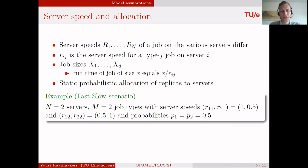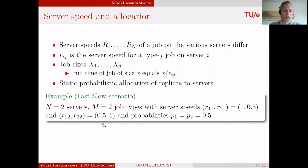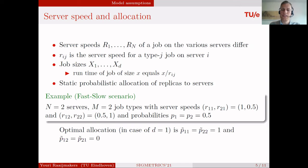To give more intuition, consider a fast-slow scenario with two servers and two job types. Job type 1 has server speeds 1 and 0.5 on servers 1 and 2. Job type 2 has server speeds 0.5 and 1 on servers 1 and 2. So job type 1 is fast on server 1 and slow on server 2, while job type 2 is slow on server 1 and fast on server 2. These job types occur with equal probability. The optimal allocation when D equals 1 and job types are known is simply to send each job to the server where it is fastest.